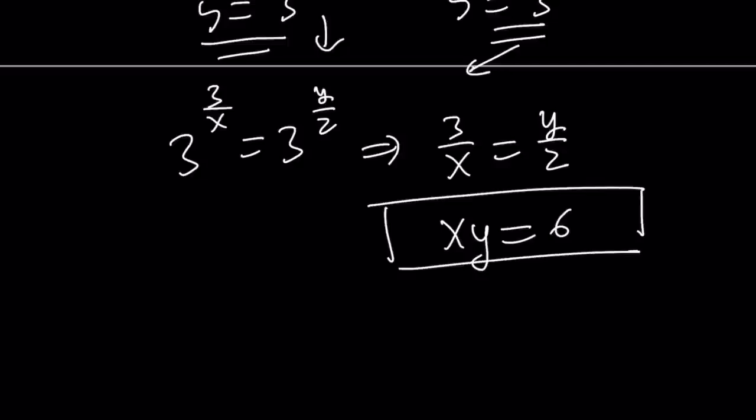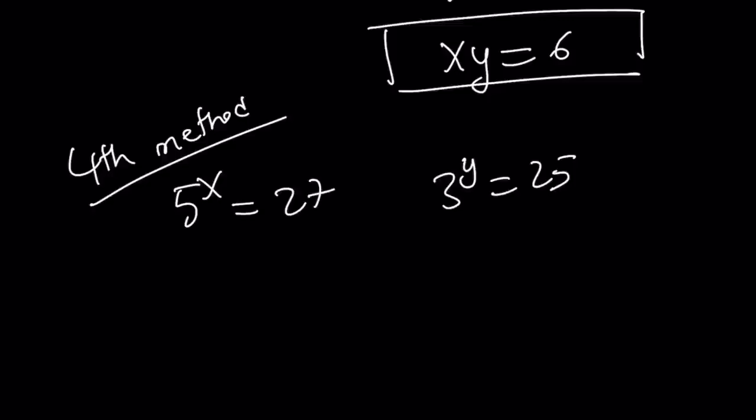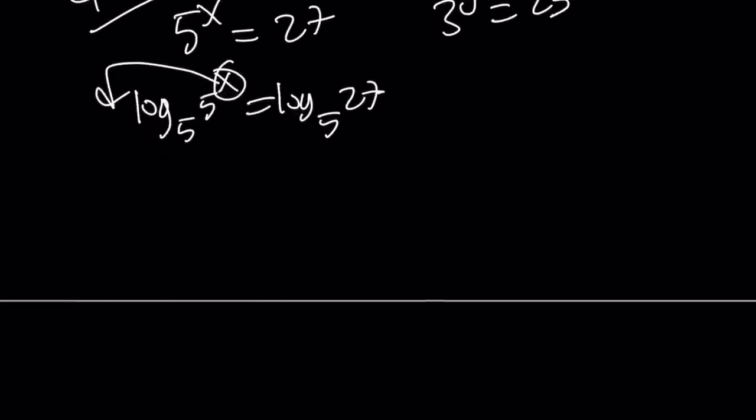All right? Okay, great. Even though I said that I was going to introduce three methods, let's go ahead and talk about an alternative approach. If you want, you can call that fourth method. I just wanted to share with you. So we have 5 to the x equals 27. And 3 to the y is 25. So we can log both sides, but this time we can use base 5. That is going to give us base 5. And then this x is going to be moved and log 5 with base 5 is just going to be 1. So we can write this as x equals log 27 with base 5.